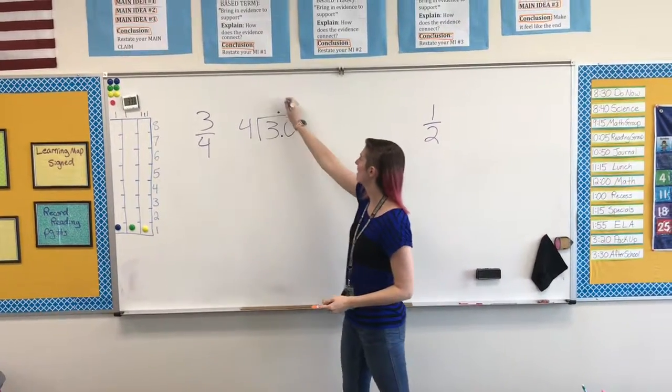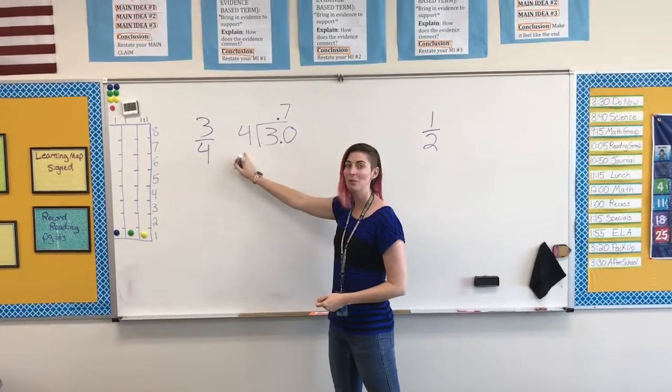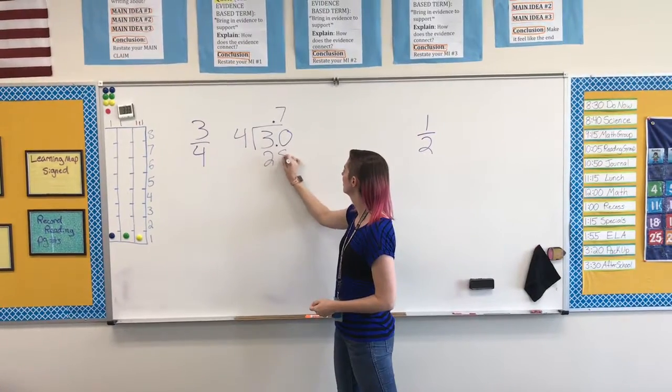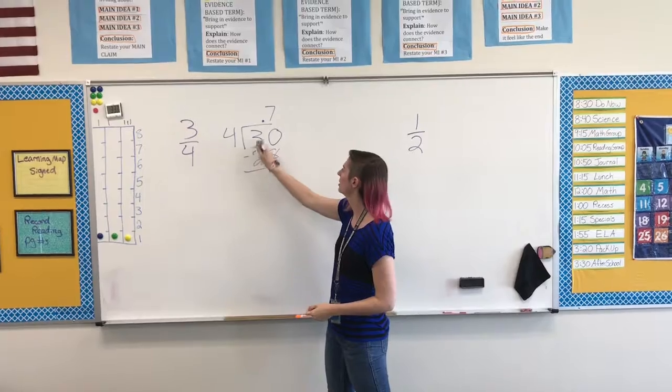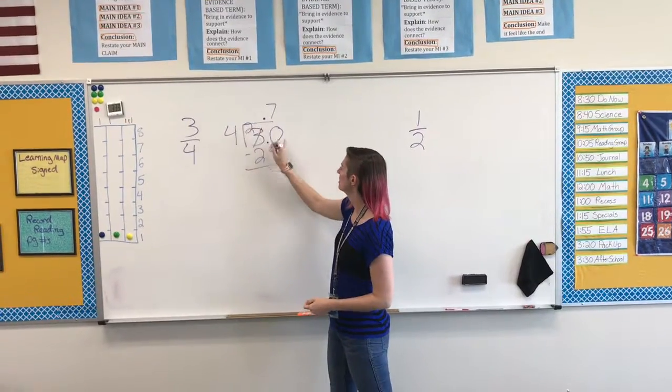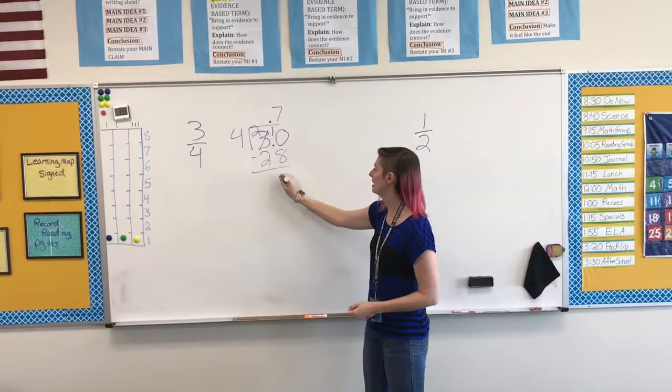4 fits into 30 seven times. 7 times 4 is 28. Subtract: 0 minus 8, can't do it. Go next door—3 becomes 2, 0 becomes 10. 10 minus 8 is 2.